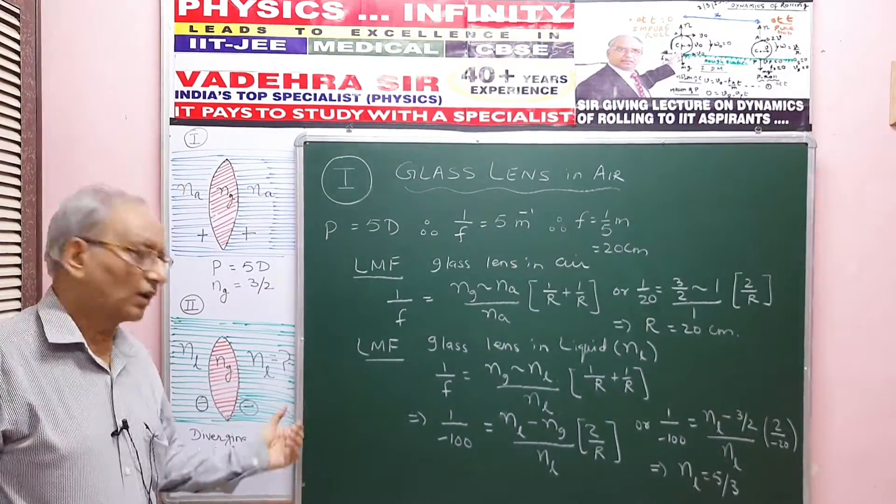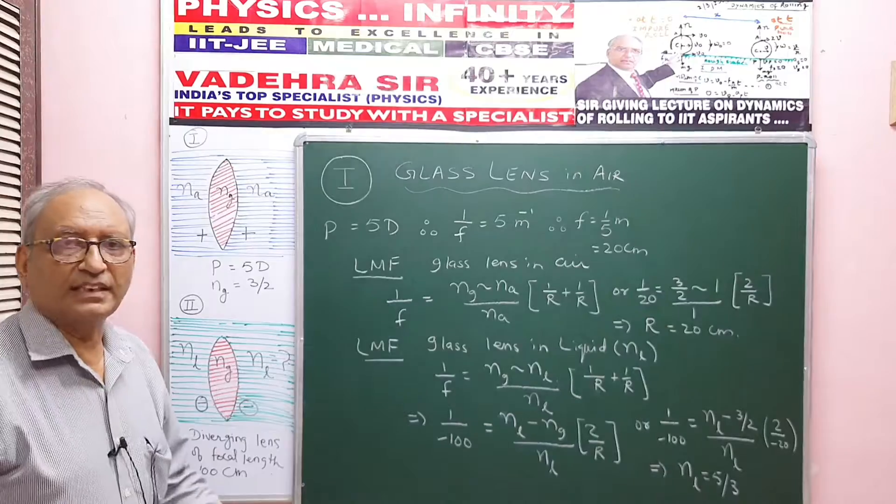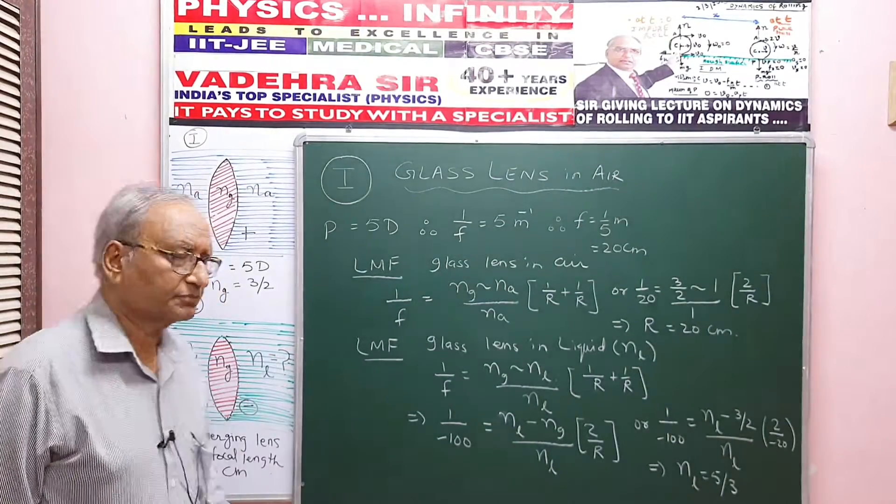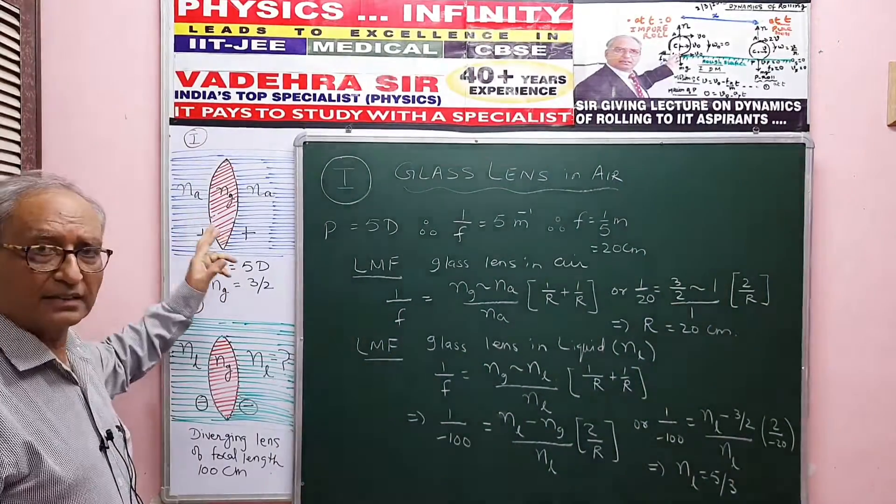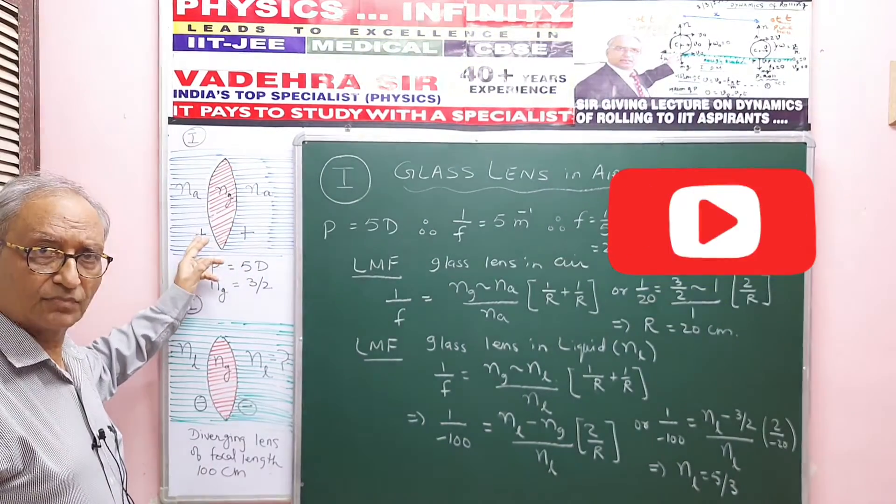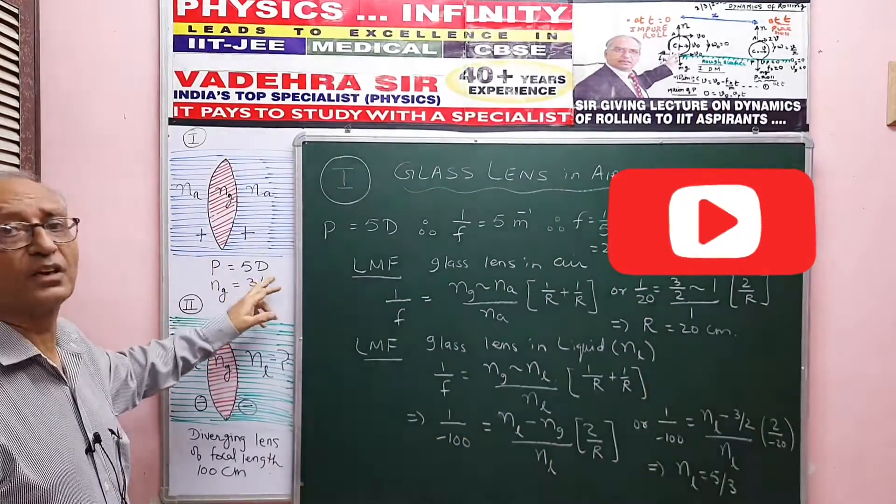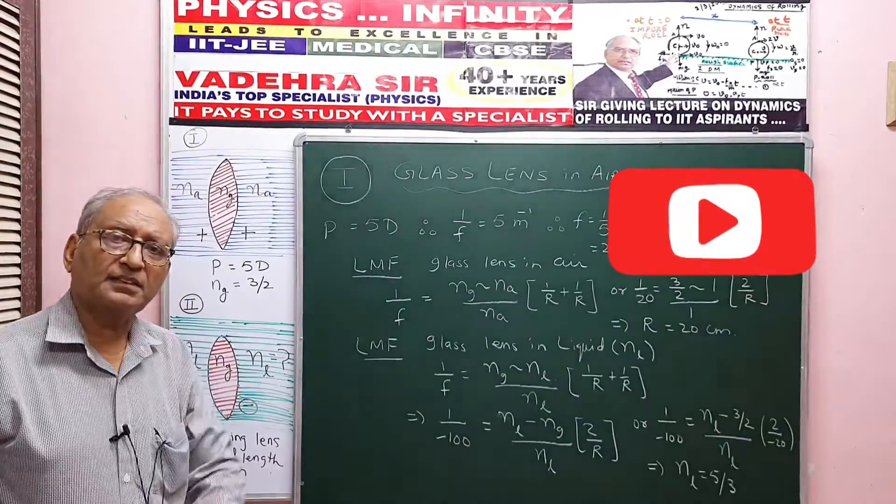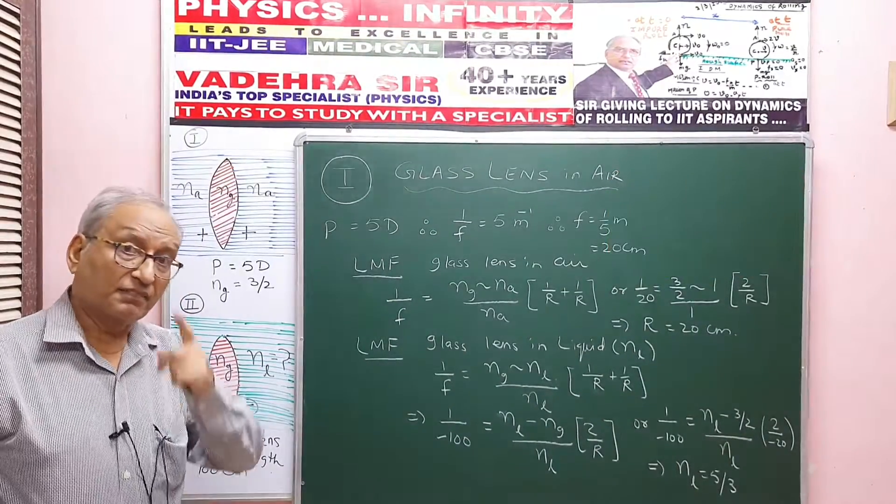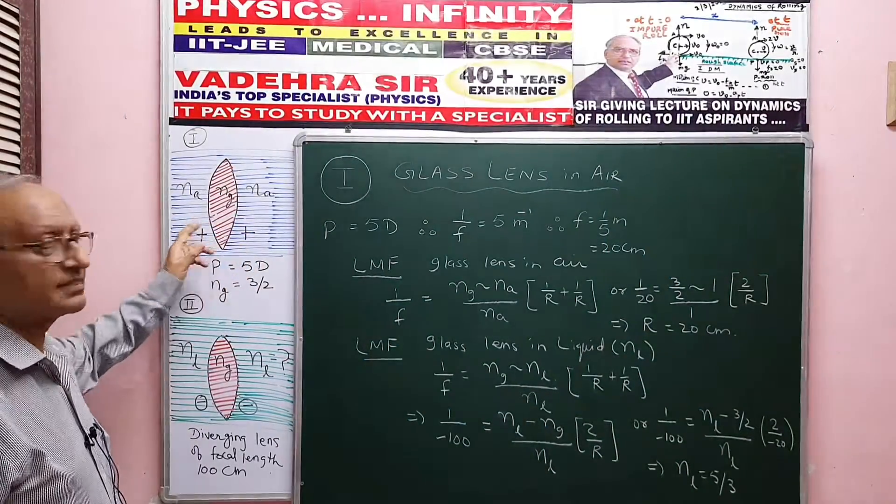What is the refractive index of the liquid NL? Now one interesting thing here: when this glass lens is in air, then its power is positive. Positive power means it's a converging lens. Converging lens means both surfaces are convex.